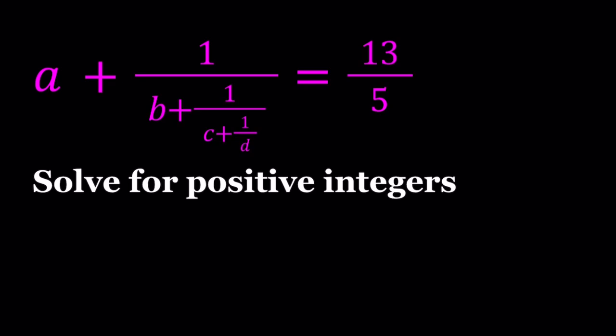We have A plus 1 over B plus 1 over C plus 1 over D, kind of like a ladder, equals 13 over 5. And we're going to be solving this equation for positive integers, which means A, B, C, D are all positive integers.